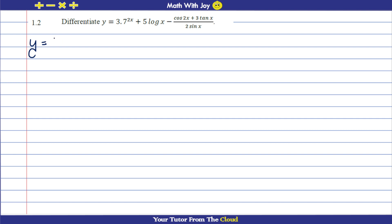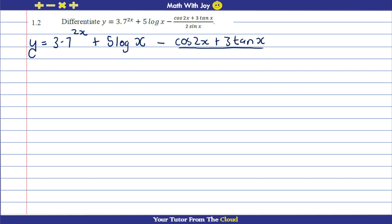The expression we have is three times seven to the power of 2x, plus five log base 10 of x, minus cos(2x), plus 3·tan(x) over 2·sin(x).